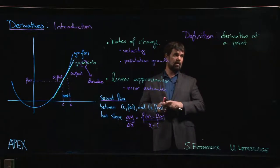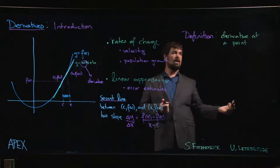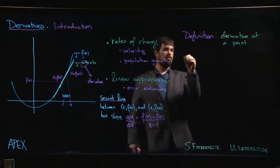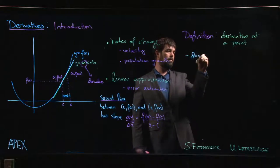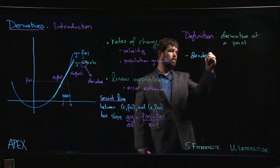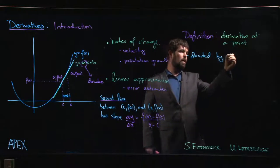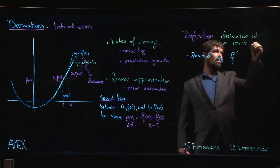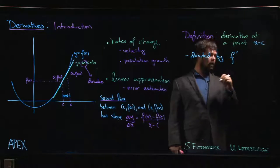Now we know how to make a definition. So for the derivative at a point, we denote this by f prime. If our point is, say, x equals c, we'll denote this by f prime of c.